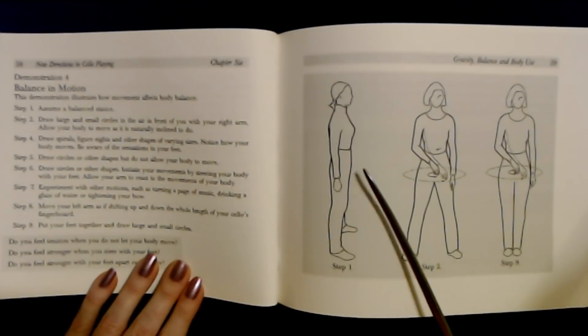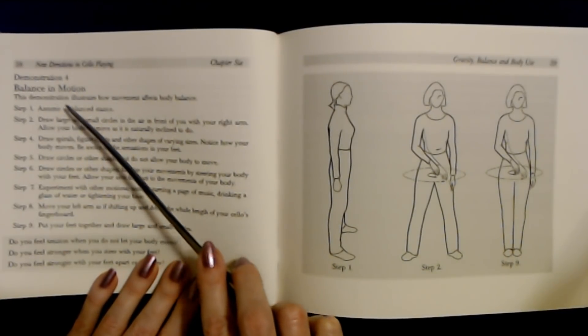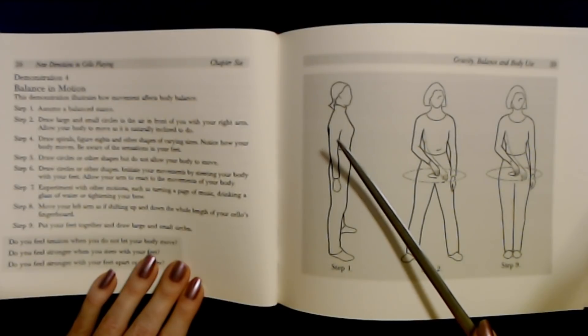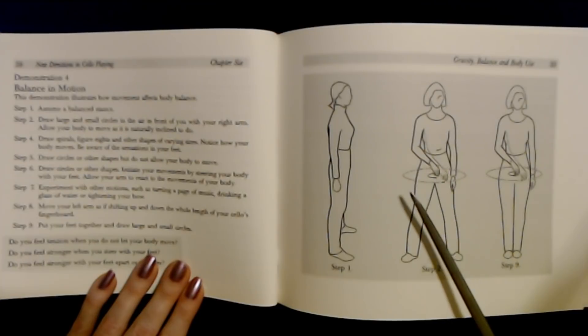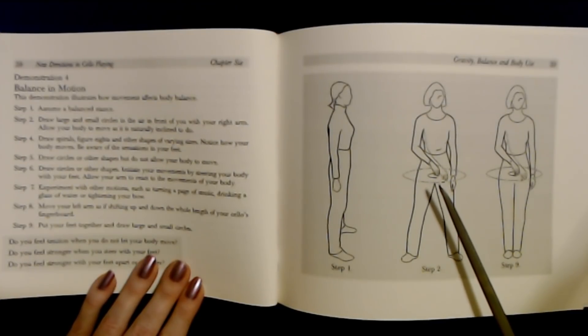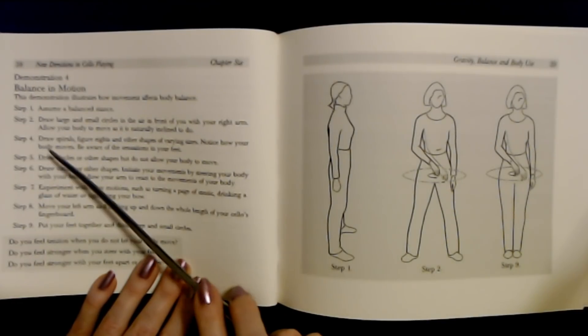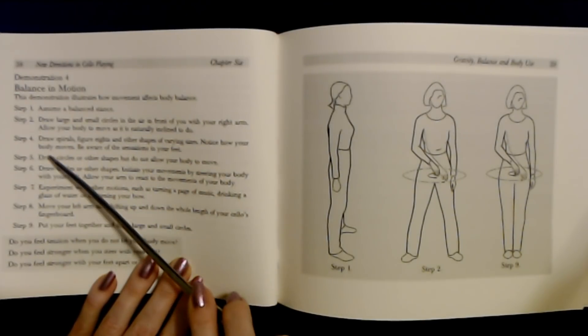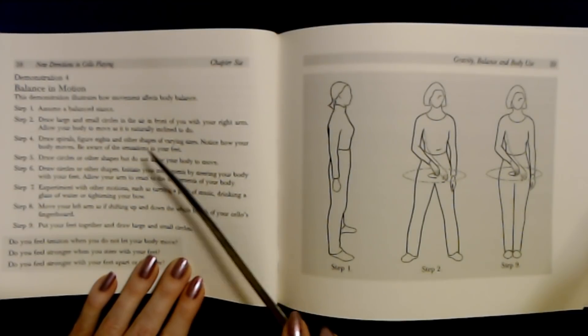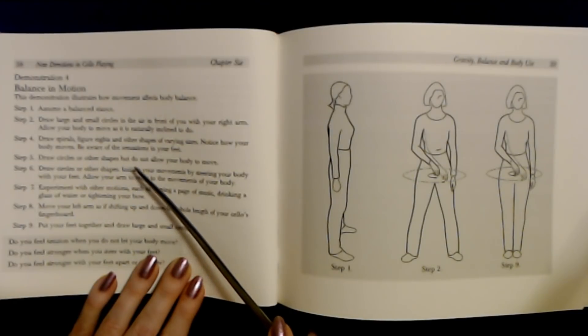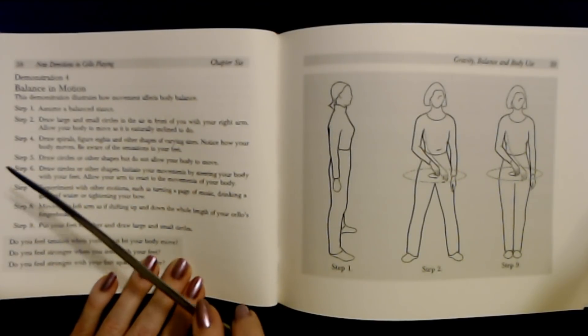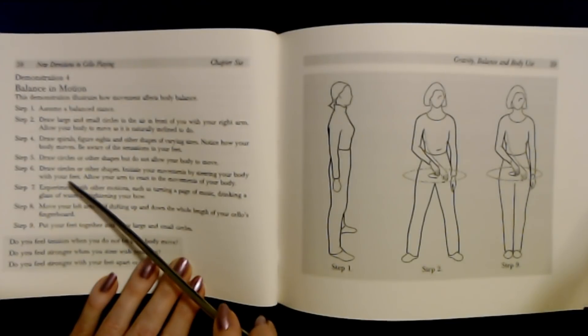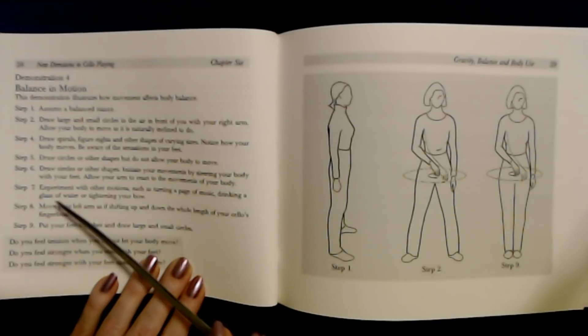Demonstration four: Balance and motion. This demonstration illustrates some of the effects of body balance. Step one: Assume a balanced stance. Step two: Draw large and small circles in front of you through space. Allow your body to move naturally. Step four: Draw spirals, swirly things, and other shapes of varying sizes. Notice how your body moves. Be aware of the sensations in your feet.